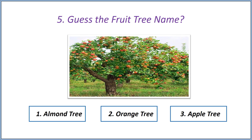Fifth question: guess the fruit tree name. Options — first option: almond tree, second option: orange tree, third option: apple tree. Answer is apple tree.